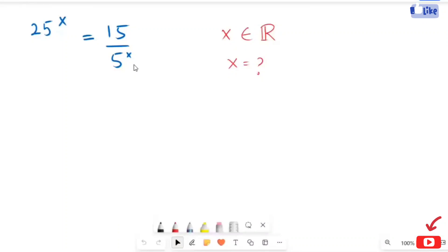Hi, we have an exponential equation: 5 raised to 2x is equal to 15 over 5 raised to x. Here we are going to find the real value of x. Now let's start our solution.